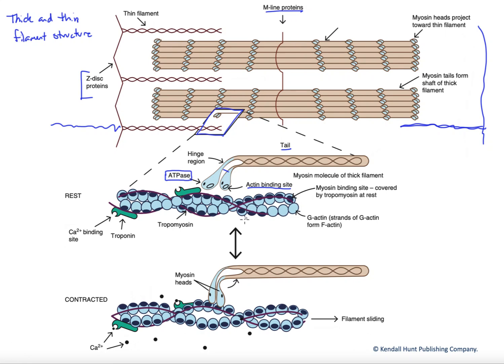If we go to the thin filament, it's a little bit more complicated molecule. It is formed of two F-actin strands. The F-actin strands are each formed by multiple G-actins. Think of the G-actins as pearls in an F-actin strand, like in a pearl necklace. We actually take two of those F-actin strands and twist them together to form the actin filament.